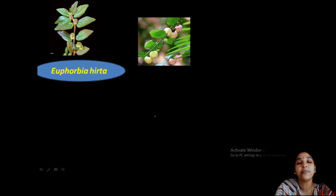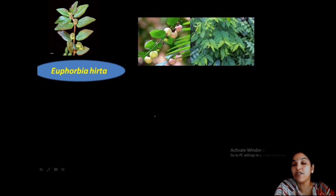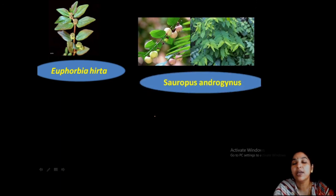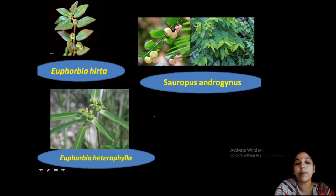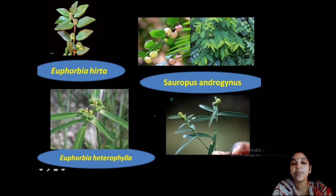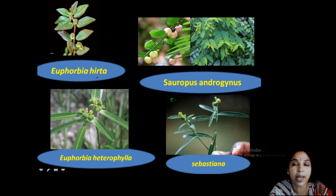Other common plants include Euphorbia hirta — a common weed growing as a prostrate plant. Sauropus androgynus — adukla cheera or sambara cheera — is used as a leafy vegetable in kitchen gardens. Euphorbia heterophylla grows widely in the campus. Sebastiania is another common plant of the family Euphorbiaceae occurring widely.